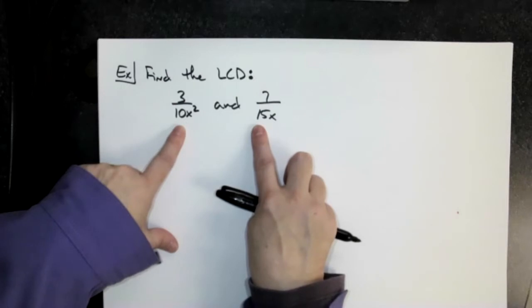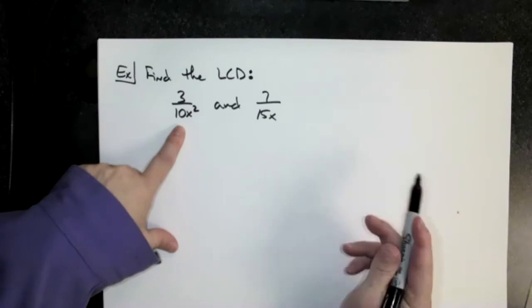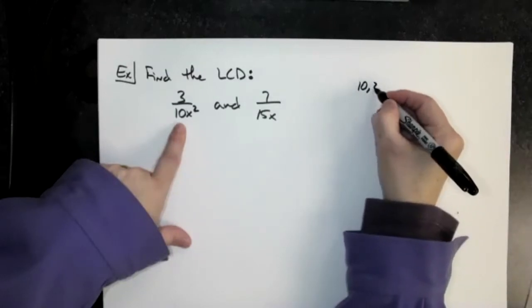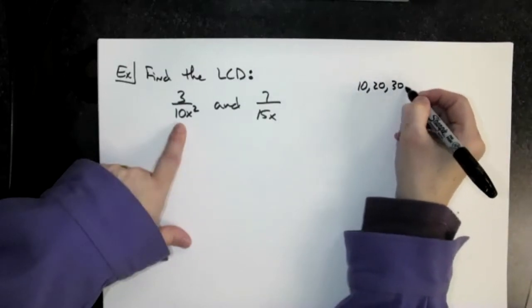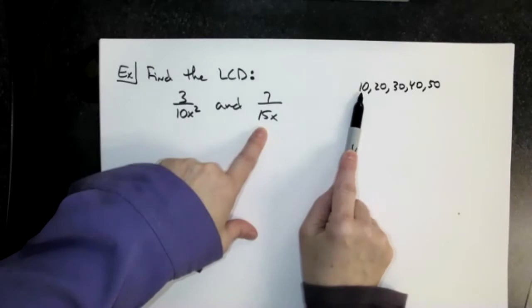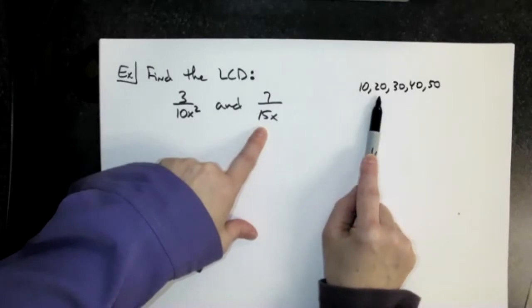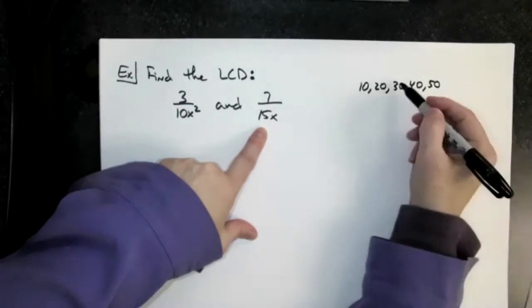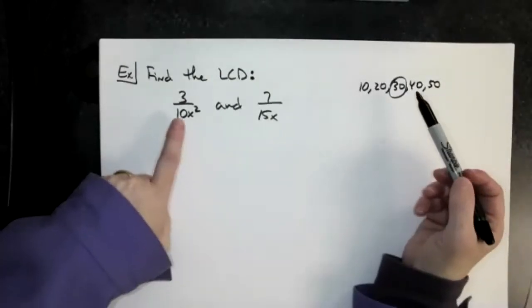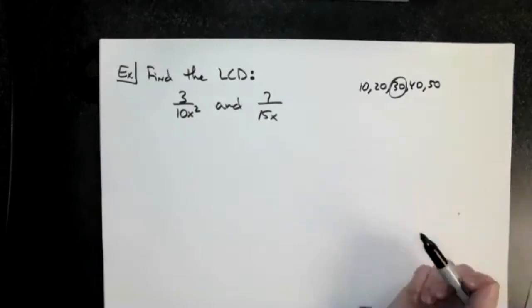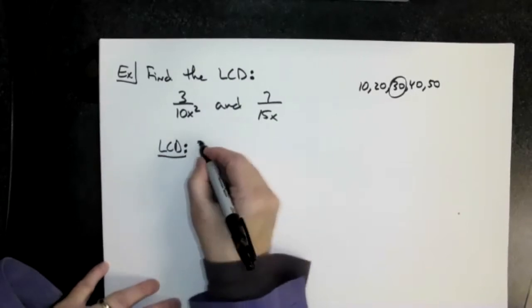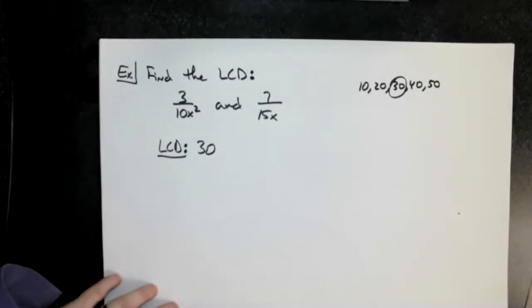If you can't do it in your head, that's okay. The old-fashioned way: take the first number and count by 10s — 10, 20, 30, 40, 50. Does 15 go into 10? No. Into 20? No. Into 30? Yes. So 30 is the least common multiple, because both 10 and 15 go into 30. So the coefficient part of the least common denominator is 30.